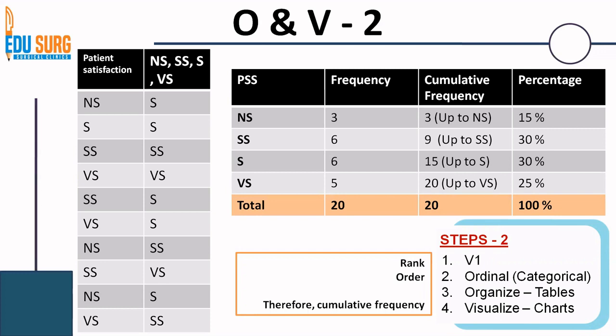What you do is put the categories in order: not satisfied, somewhat satisfied, satisfied, and very satisfied, and then you keep adding from top to bottom. Up to not satisfied, you have 3; then up to somewhat satisfied is 3 plus 6, that is 9; then up to satisfied is 3 plus 6 plus 6, that is 15; and when you reach up to very satisfied, it is 20 out of 20. That is how cumulative frequency is calculated. You can have cumulative frequency when there is order or ranking in the data.